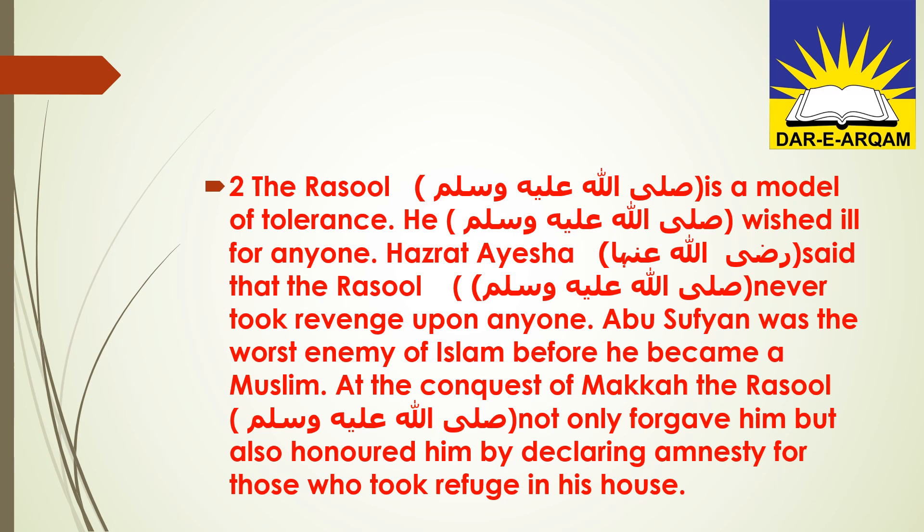Abu Sufyan was a leader and merchant from the Quraish tribe of Makkah. Abu Sufyan was the worst — it is the third degree of bad: bad, worse, worst, badtarin — enemy — dushman — of Islam. So: Abu Sufyan musliman hone se pehle Islam ka badtarin dushman tha — before he became a Muslim.